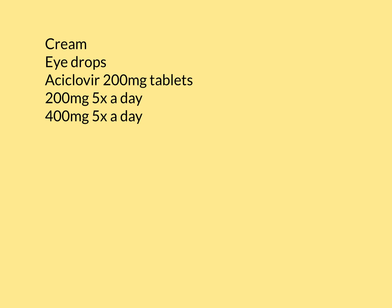Regarding tablets, acyclovir mainly comes in 200 milligram tablets. For a bad herpetic skin infection, herpetic mucosal infection, or genital herpes infection, the typical regime is 200 milligrams five times a day — for example at 9 a.m., midday, 3 p.m., 6 p.m., and 10 p.m. If the infection is really severe — such as a horrific HSV skin infection or severe genital infection with really bad pain — then it can be increased to the more intensive regimen of 400 milligrams five times a day.